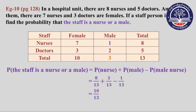The definition for any two events A and B: the probability of A or B is equal to the probability of A plus probability of B minus probability of A and B.